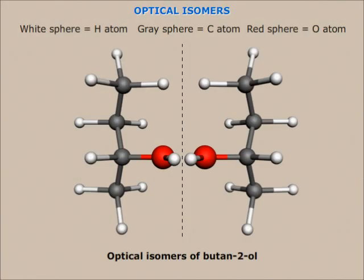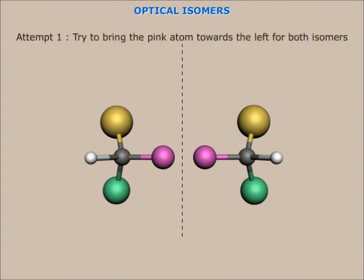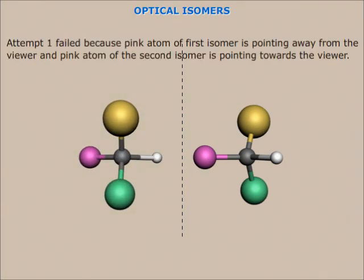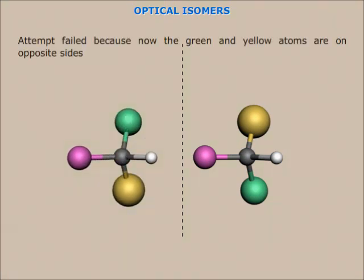Watch this molecule which is called butan-2-ol. This carbon has four different groups attached to it and is chiral. These isomers are not superimposable however they may be rotated. Try to bring the pink atom on the same side — still it is not matching. Because the pink atom in one molecule is pointing backwards and the pink atom in the other molecule is pointing towards the viewer. Now try to bring the pink atom in a position such that it points towards the viewer, but still it is not matching. Now the green and yellow atoms are on the opposite sides.